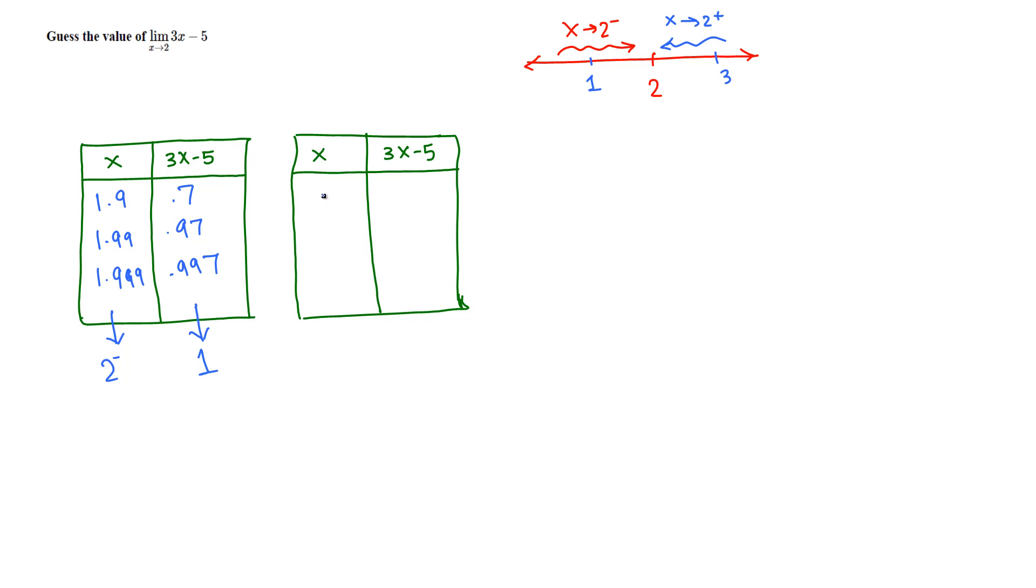Now we do the same thing. This time we approach close to 2 from the right side, so very close: 2.1, 2.01, 2.001. Let's plug these values into this function using the calculator. 2.1 gives us 1.3, 2.01 gives 1.03, and 2.001 gives 1.003.